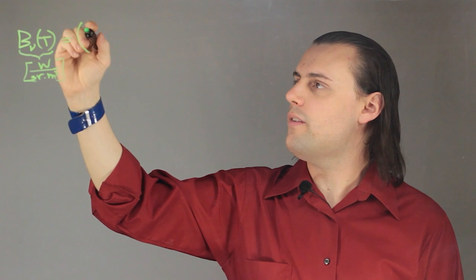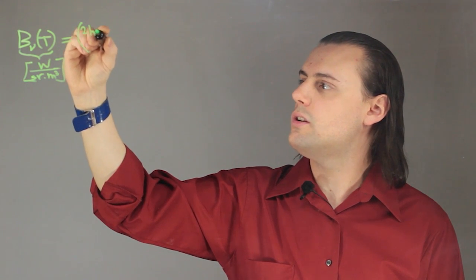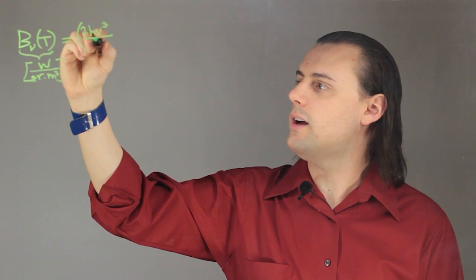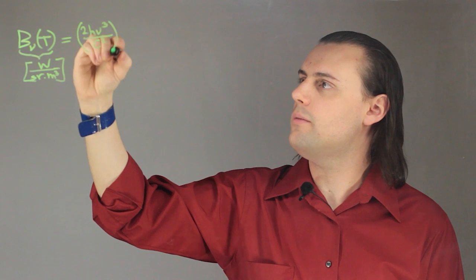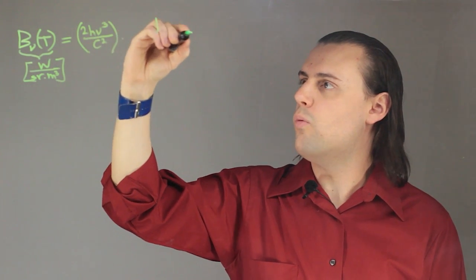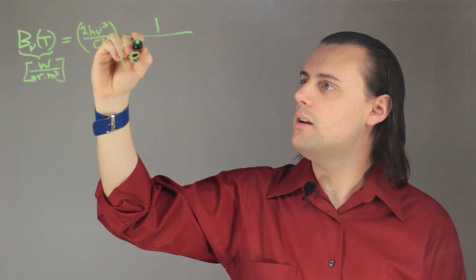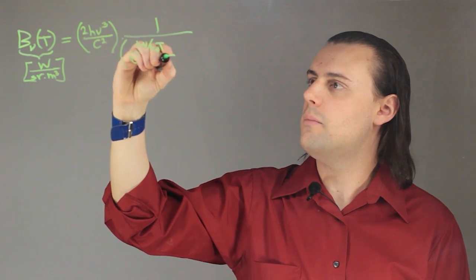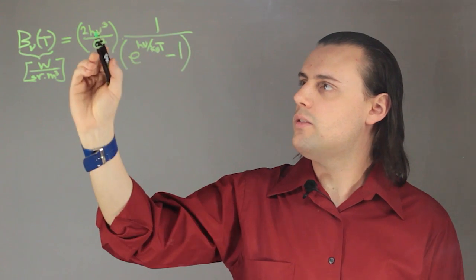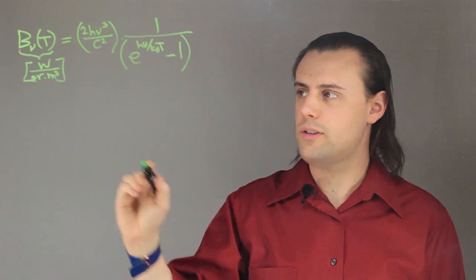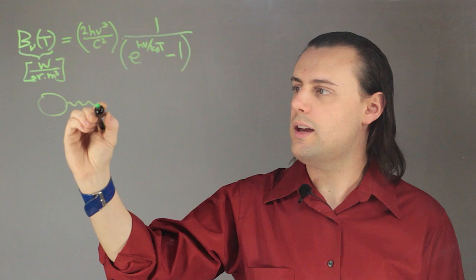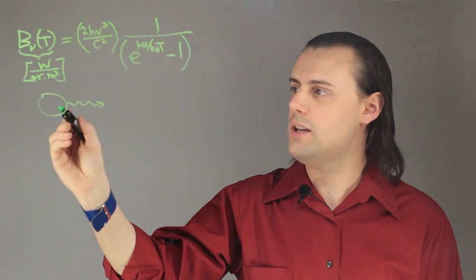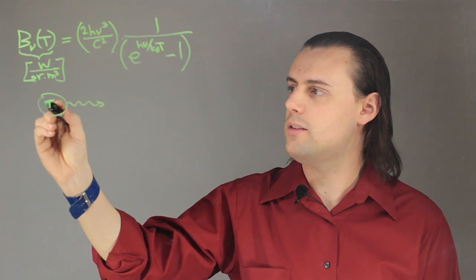The formula for the spectral radiance is given in terms of a pre-factor, 2H nu cubed divided by the speed of light squared, times 1 over e raised to H nu divided by k_B T minus 1. Nu is the frequency of the light, of the thermal radiation emitted by this blackbody at a temperature T.